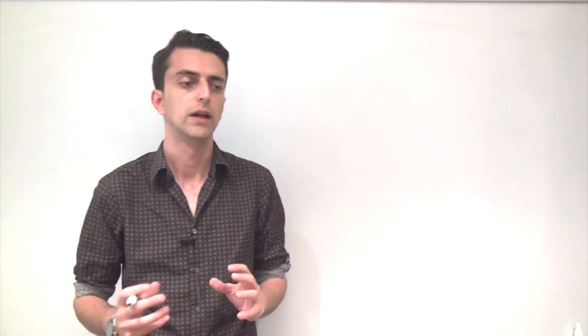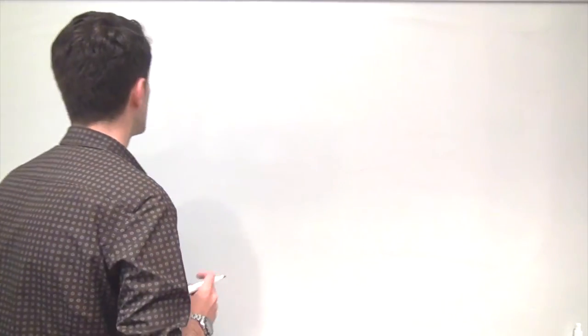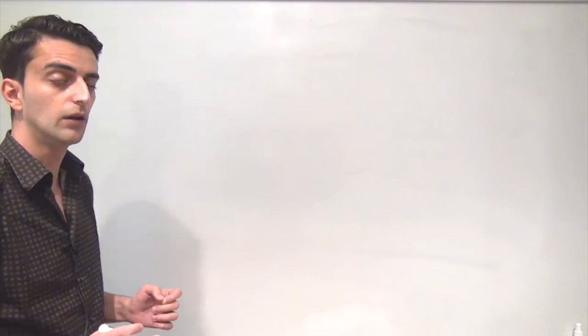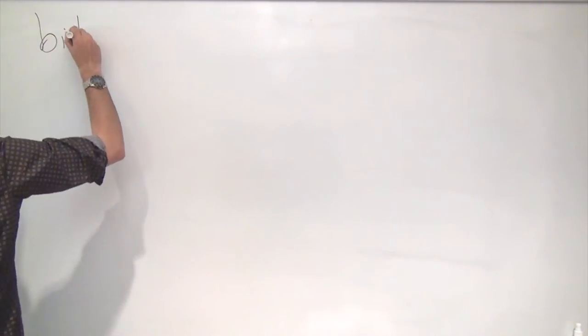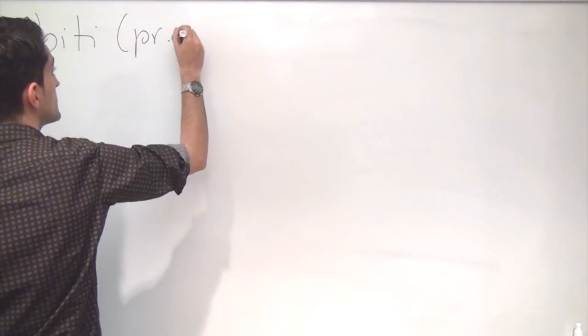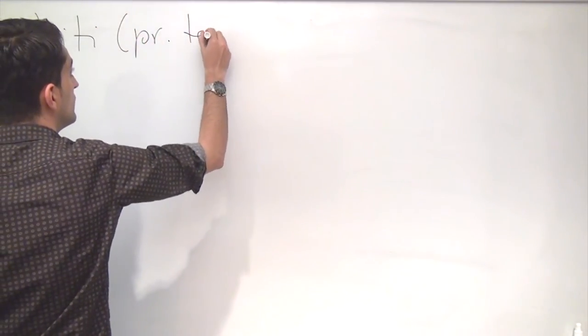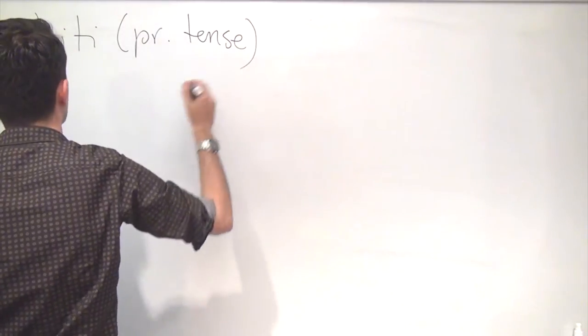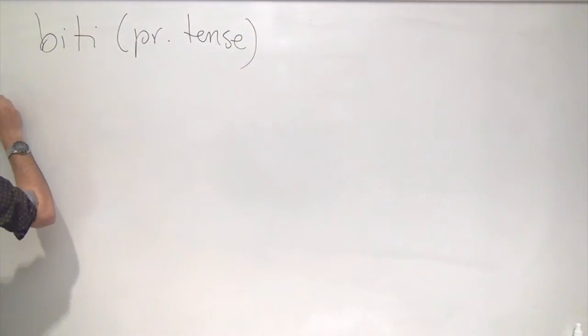The first building block is the clitic form of the verb biti or to be in present tense. So, biti in present tense is our first building block. Let's write it out.